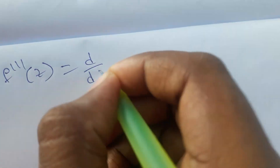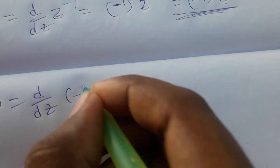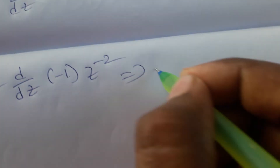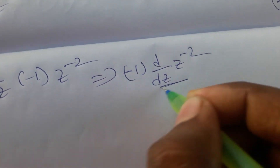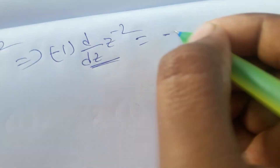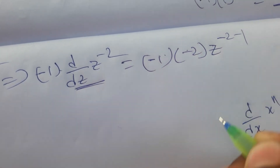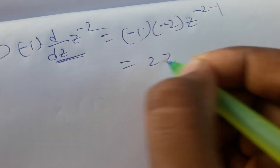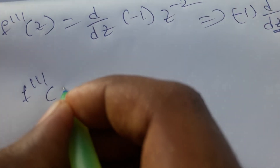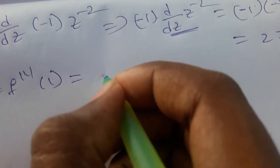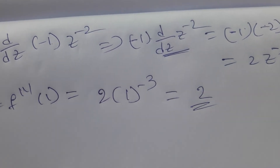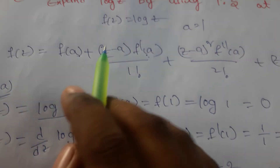To find f'''(a): f'''(z) = d/dz of (−z^(−2)). Here −1 is a constant, so we differentiate z^(−2): (−1)·(−2)·z^(−3) = 2z^(−3). So f'''(z) = 2z^(−3). Then f'''(1): substituting z=1 gives 2·(1)^(−3) = 2.